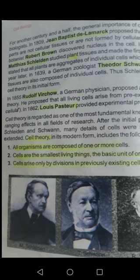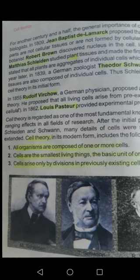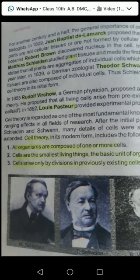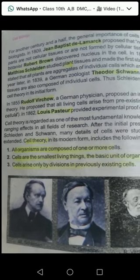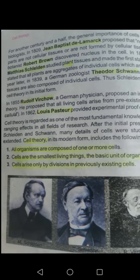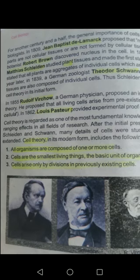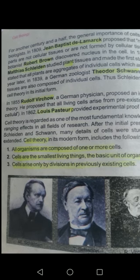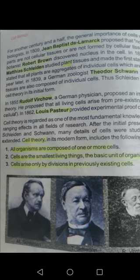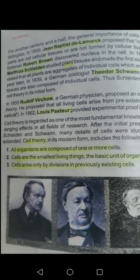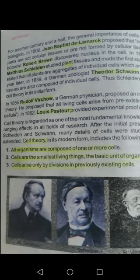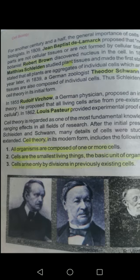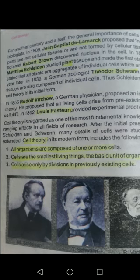After that, in 1839, another scientist, Theodor Schwann, also contributed to cell theory. He discovered animal cells and said that all animals are made up of tissues or cells, giving the idea that animals are also composed of cells.